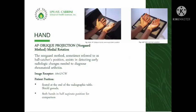The last projection for the hand is the AP oblique in medial rotation, or the Norgaard method, also referred to as the ball catcher's position. This is a bilateral examination in which both hands are radiographed at the same time. This method is used to assist in detecting early radiologic changes needed to diagnose rheumatoid arthritis. The patient is seated at the end of the radiographic table and both hands are placed in a half-supinated position on the image receptor for comparison.